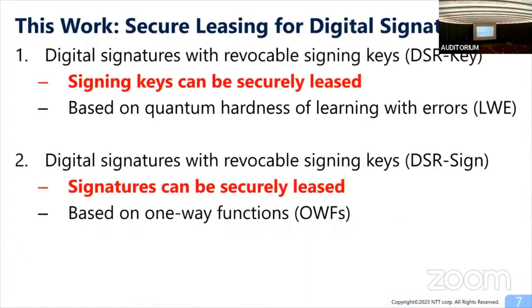In this work, we answer this question affirmatively. We construct two types of secure leasing for digital signatures. The first is called digital signatures with revocable signing keys, or DSR key for short. In DSR key, signing keys can be securely leased, and after the leasing period expires, signing keys can be deleted — which is regarded as a revocation of signing ability. We construct this based on the quantum hardness of Learning with Errors (LWE), a very standard assumption underlying post-quantum cryptography.